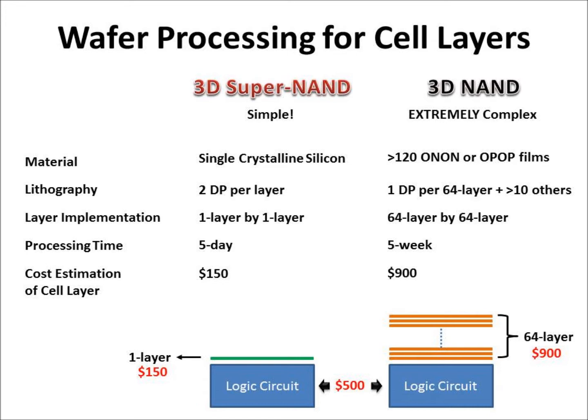Here is the cost estimation of the cell array. For one layer of 3D SuperNAND, it will cost about $150. For 64-layer 3D NAND, it will cost about $900. So the total cost is about $650 for one-layer 3D SuperNAND and $1,400 for 64-layer 3D NAND.